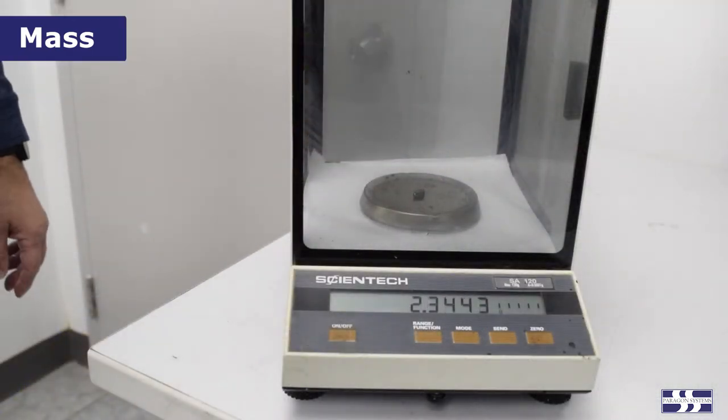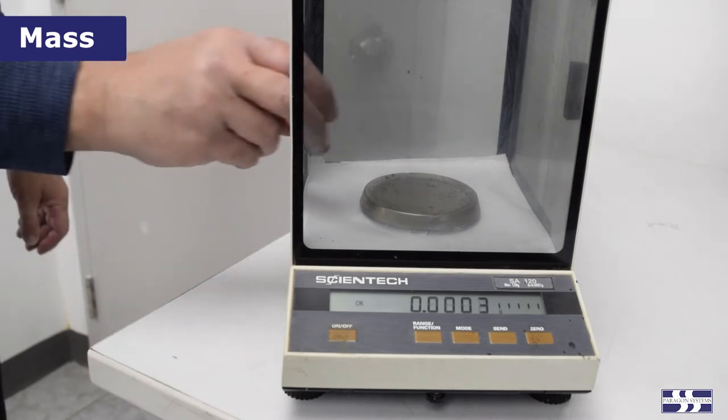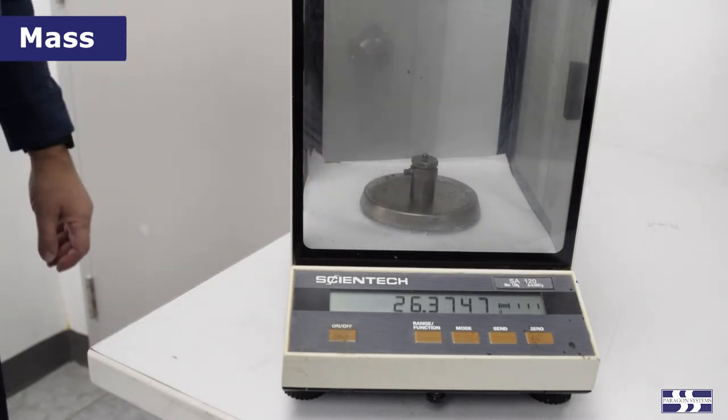For this reason, very lightweight accelerometers, some as light as 0.6 grams, are sometimes used to monitor objects like PC boards or small electronic components.